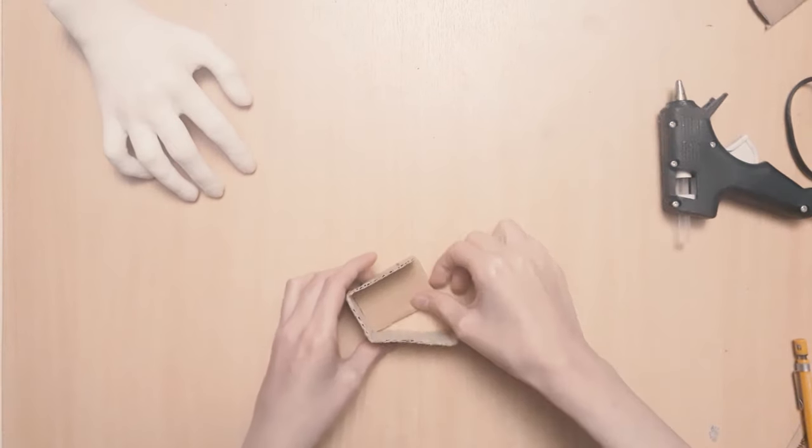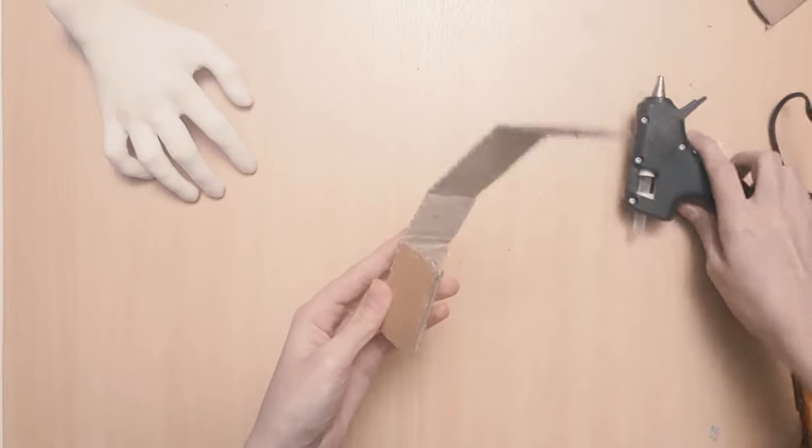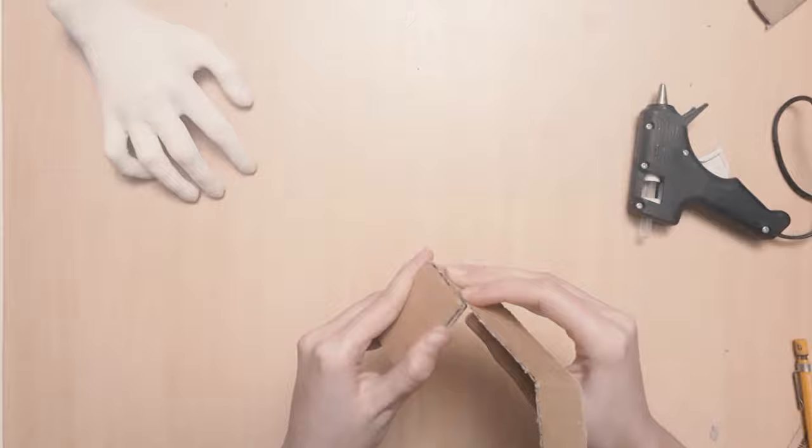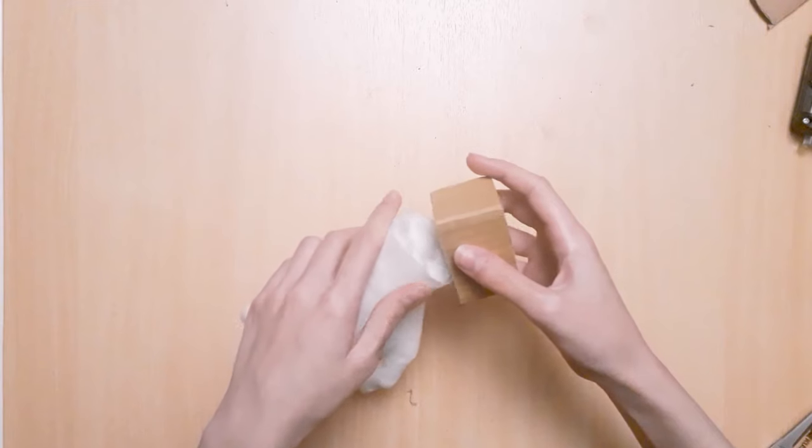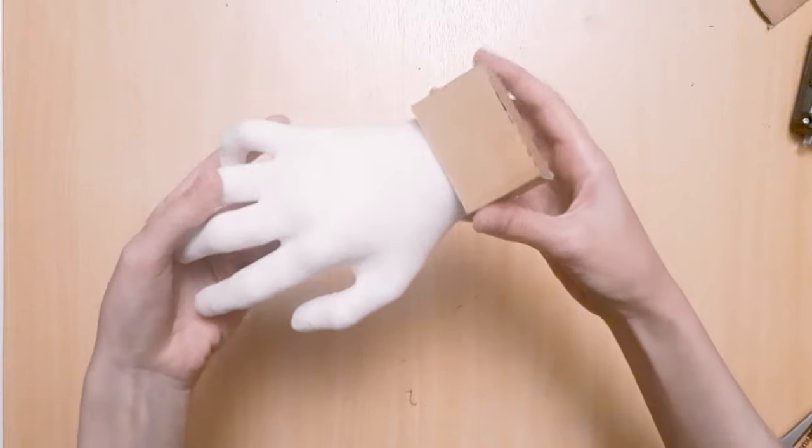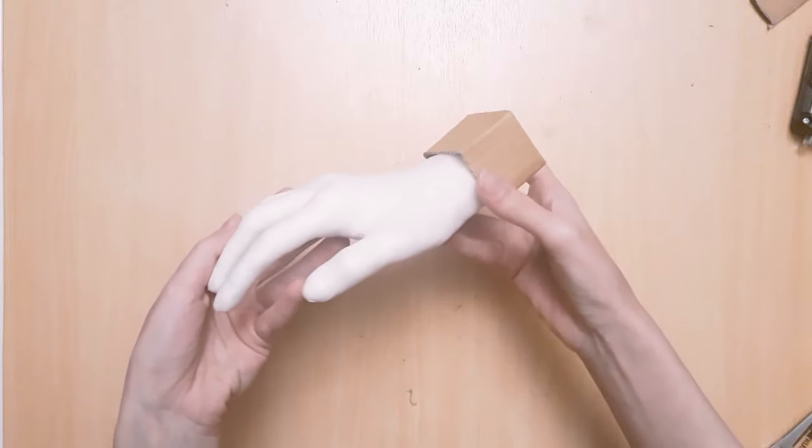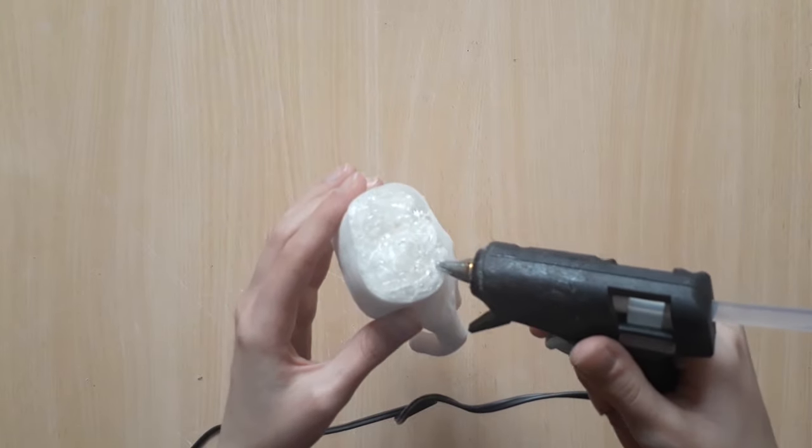Now we need to bend and hot glue the long part onto the smaller one, making it into a little box. Once that is complete, you can test it on your hand and yup, it looks and fits great. And also, we need to seal up the bottom of our hand with hot glue.